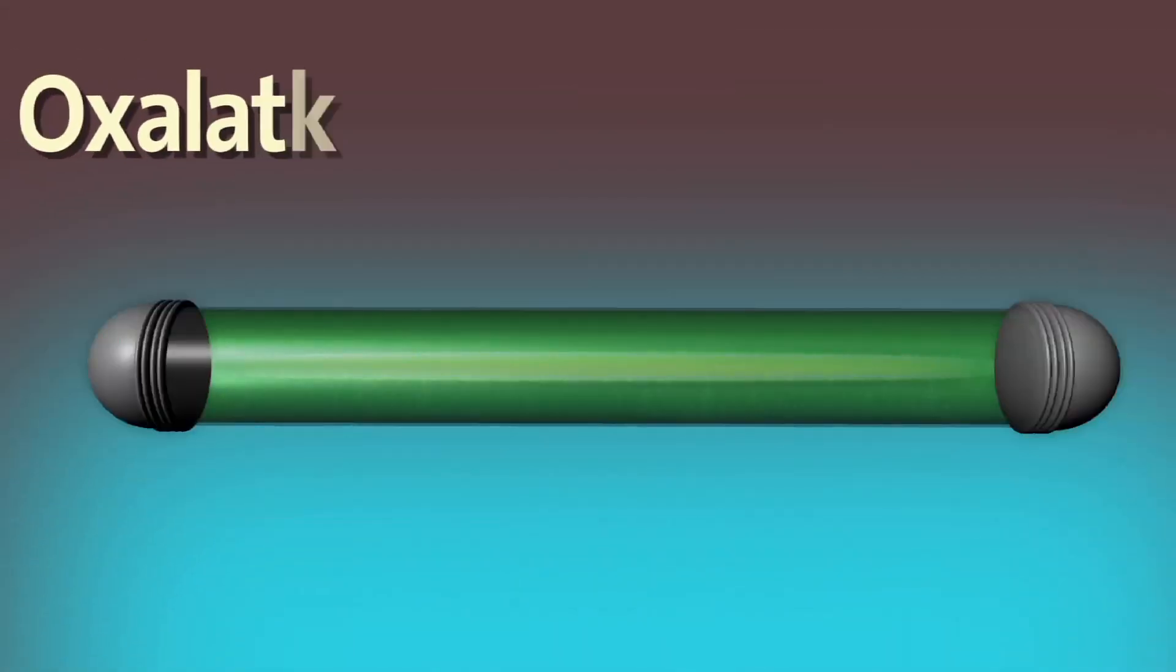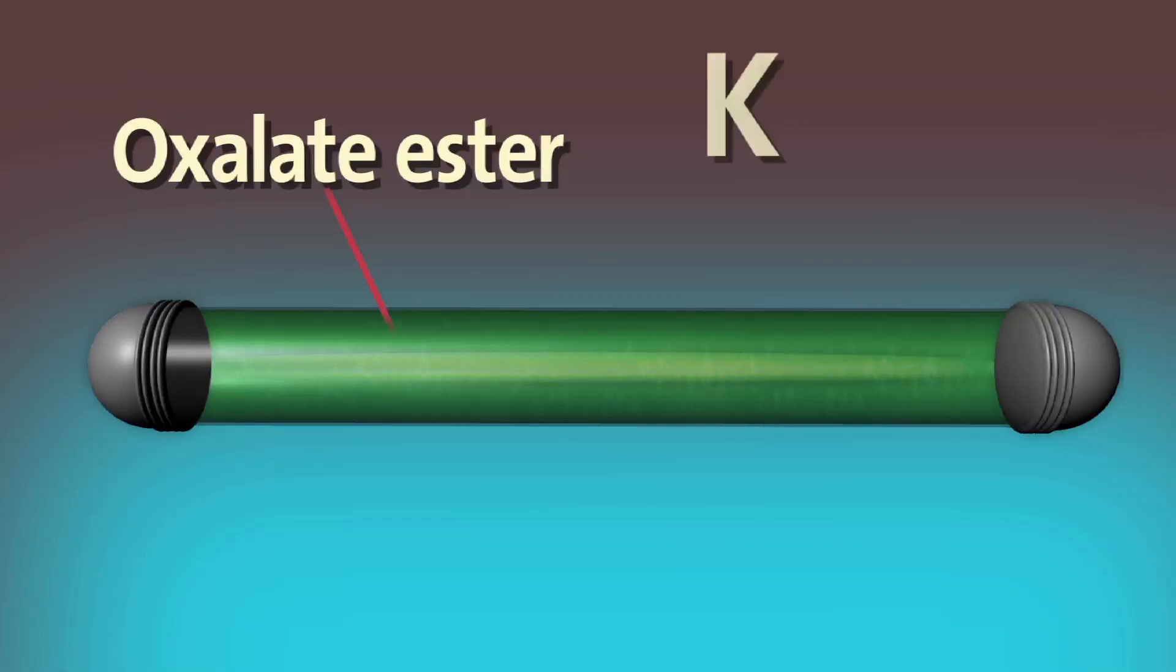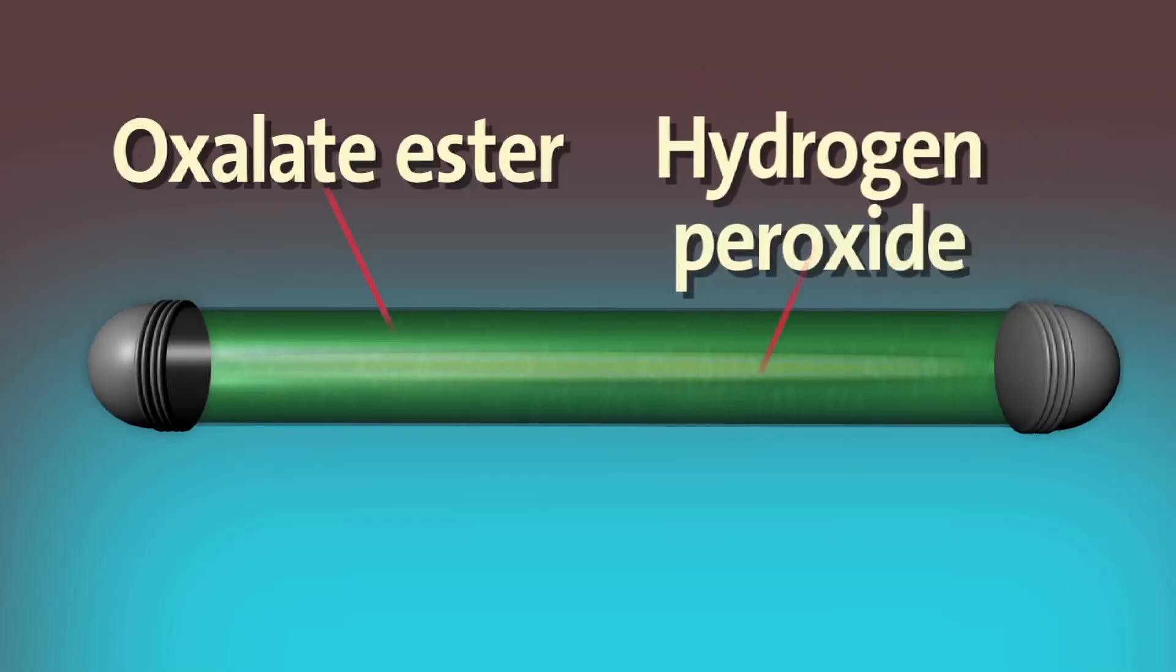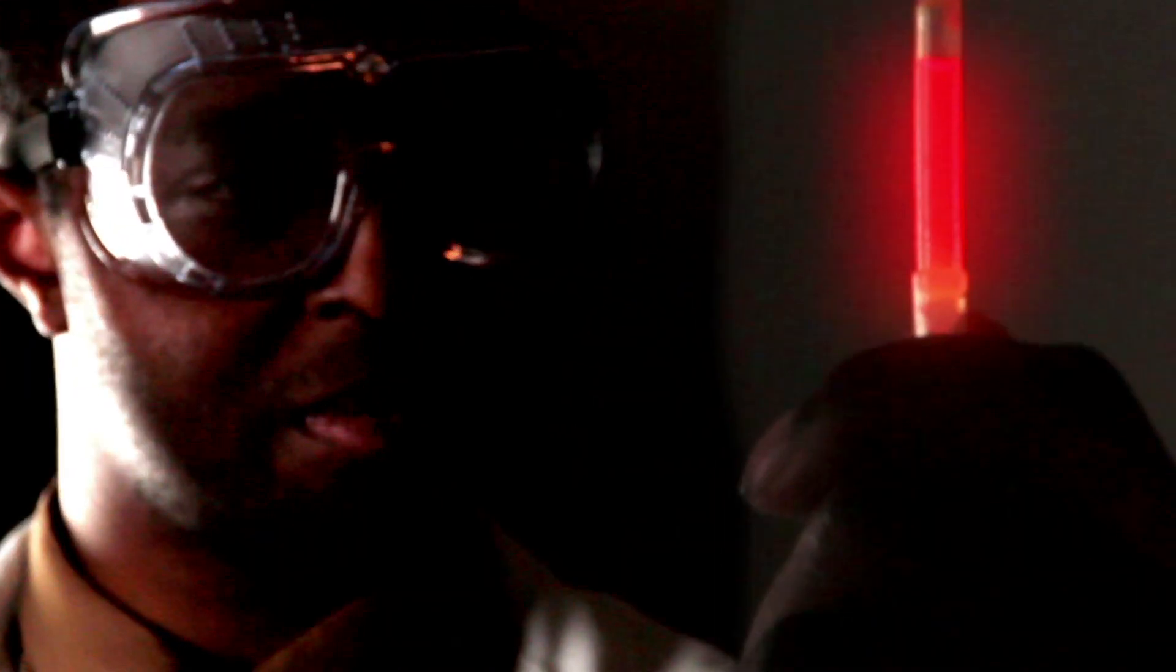Every glow stick is like a mini chemistry set in action. Oxalate ester and colorful dye is in the outer chamber, while hydrogen peroxide is in a small vial in the middle. When you crack a glow stick, the glass vial breaks, releasing the peroxide and kick-starting the reaction that leads to the glowing effect.